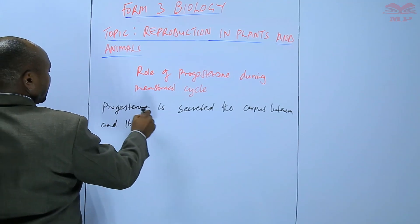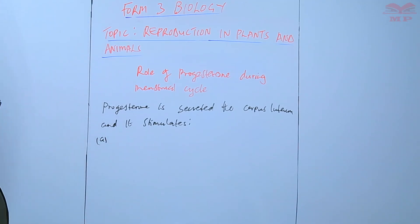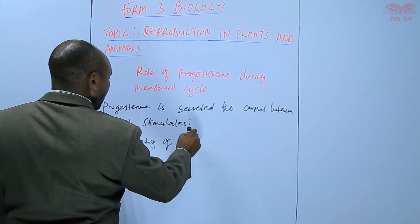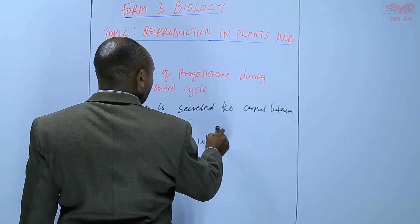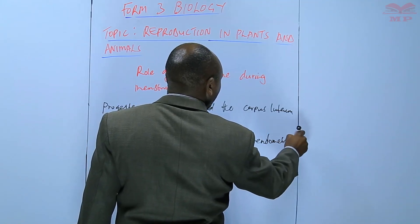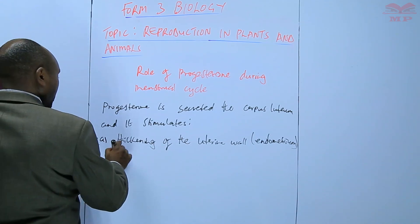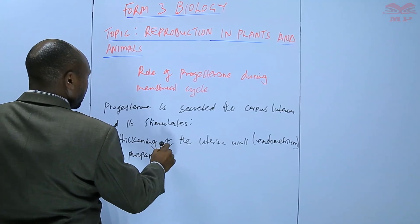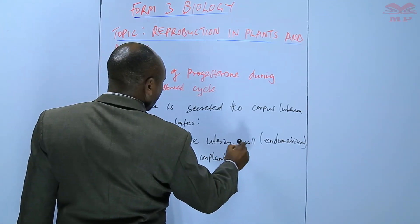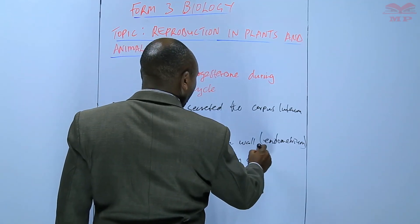Progesterone stimulates the thickening of the uterine wall, which we call the endometrium, in preparation for implantation of the blastocyst. So it makes the uterine wall thicker so that after fertilization, implantation of the blastocyst can happen there.